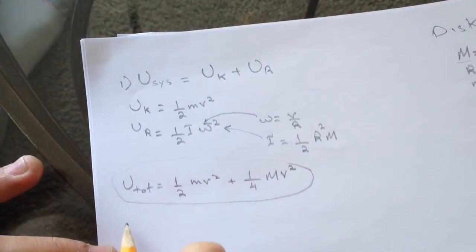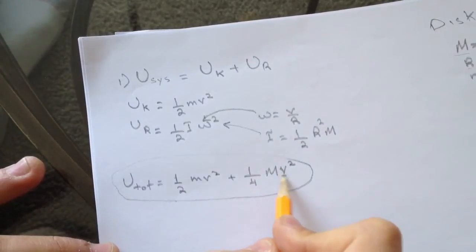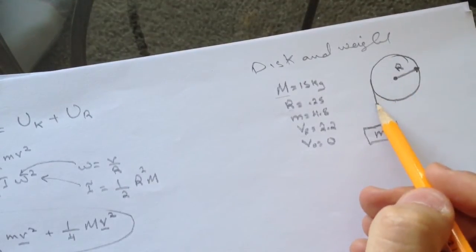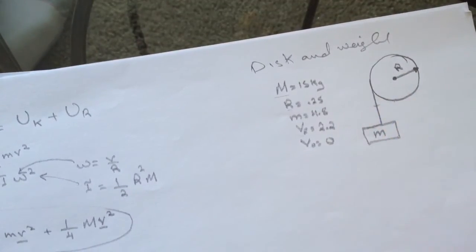The v's are the same here because the string is not slipping.